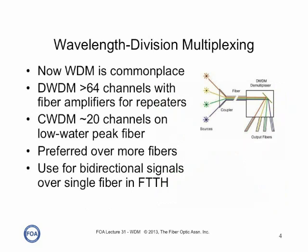It's typical in long distance networks today to use wavelength division multiplexing on very long distance lengths. Here we use dense wavelength division multiplexing with more than 64 channels, tightly spaced, with fiber amplifiers for repeaters. We also can use coarse wavelength division multiplexing with fewer channels, wider spaced, but for those we need low water peak fiber, which allows us to use the entire spectrum of single mode fiber.